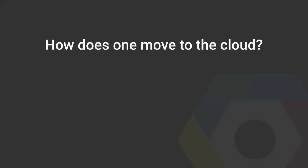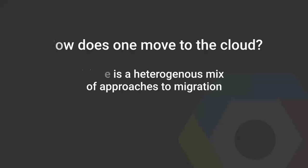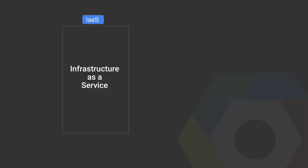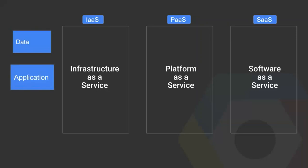So how does one move to the cloud? Cloud migration is a very complex topic, and there's a heterogeneous mix of ways one would actually move their systems to the cloud. There are three main cloud landing points: Infrastructure as a Service (IaaS), Platform as a Service (PaaS), or Software as a Service (SaaS). There are also three things that might move to the cloud: the data, the application layer, and the operating system. Google supports migration in all these different heterogeneous ways.